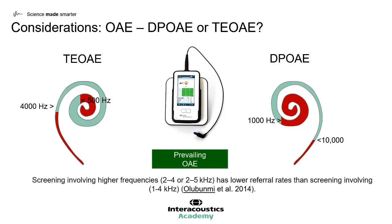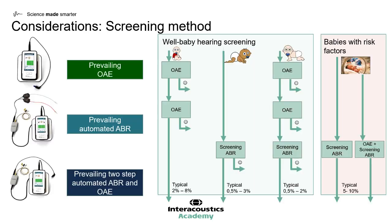An interesting study from 2014 showed that screening at higher frequencies such as 2 to 4 kilohertz or 2 to 5 kilohertz resulted in lower referral rates than screening at frequencies 1 to 4 kilohertz. Despite this, both transient evoked and distortion product otoacoustic emissions can measure these frequencies, and therefore both remain valid methods for newborn hearing screening, with one not outperforming the other.